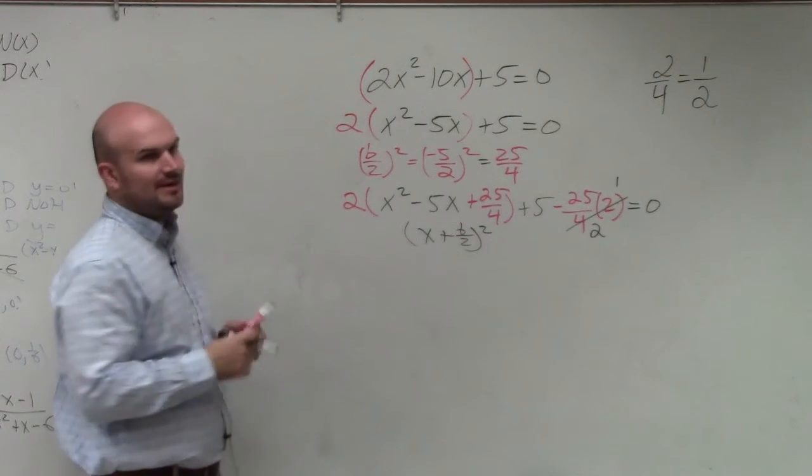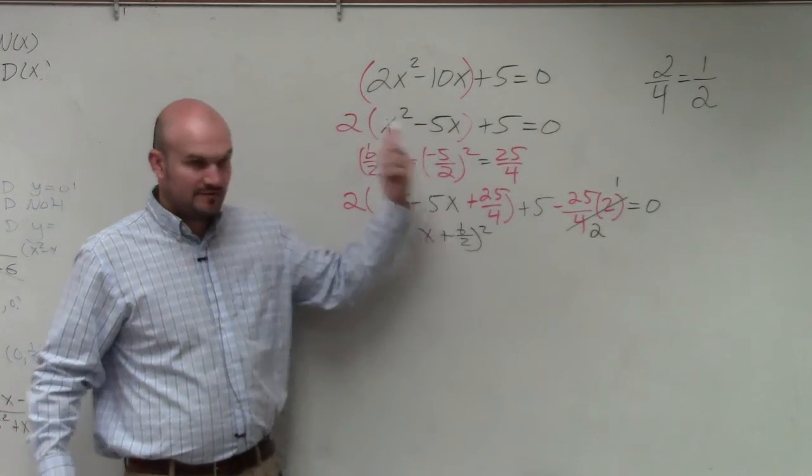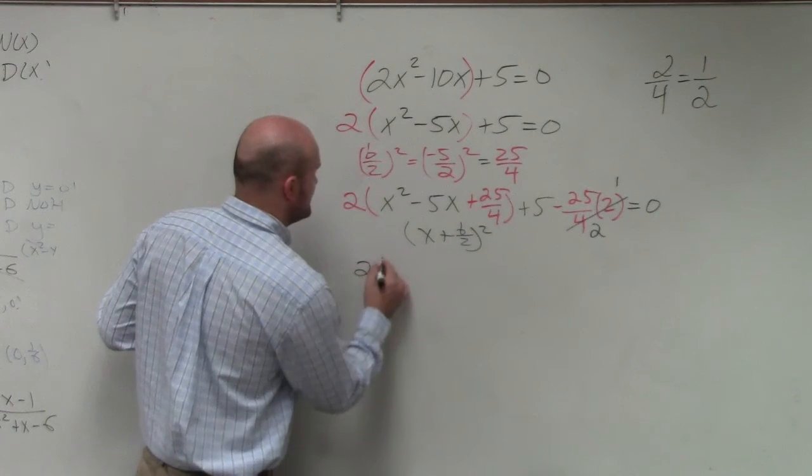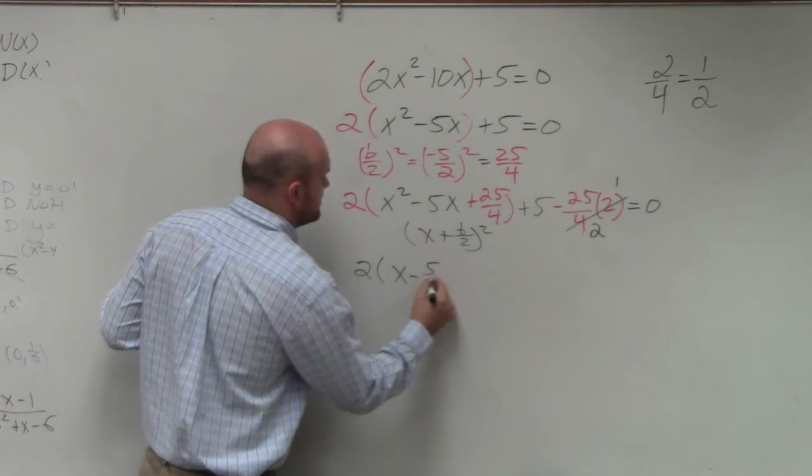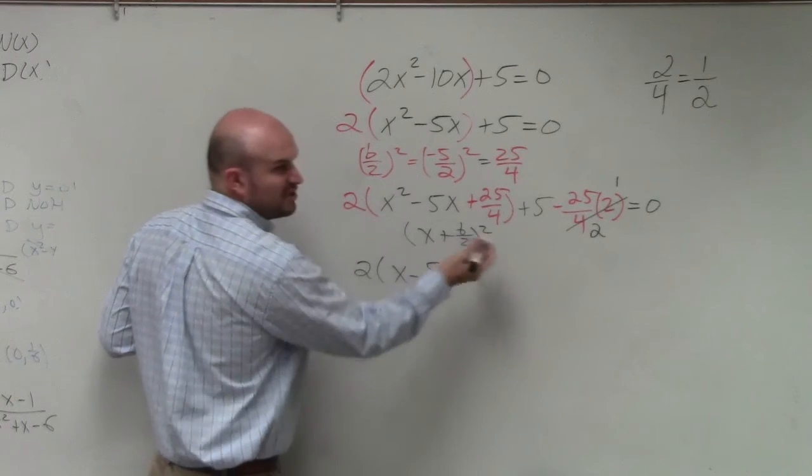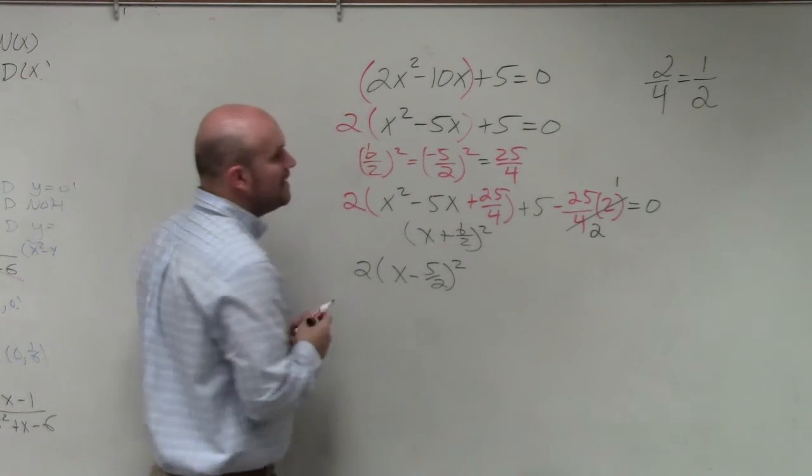What was my b divided by 2? 5 over 2. So I have 2 times x minus 5 halves, because it's plus or minus, the same thing as subtracting. Now, we have another issue.